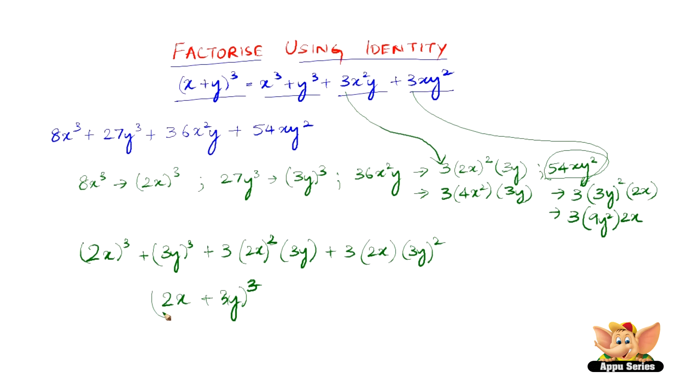Therefore, the factorized form of 8x³ + 27y³ + 36x²y + 54xy² is (2x + 3y)³.